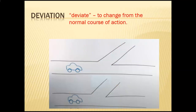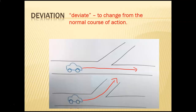The last word: deviation. This is kind of a new word. Deviation comes from the root word deviate, which means to change from the normal course of action — basically to stray. For example, if I have a car on a street, the normal pattern would be to go straight. But if we deviated from that path, we'd turn off. I deviated from the path. That's a visual example of deviation.